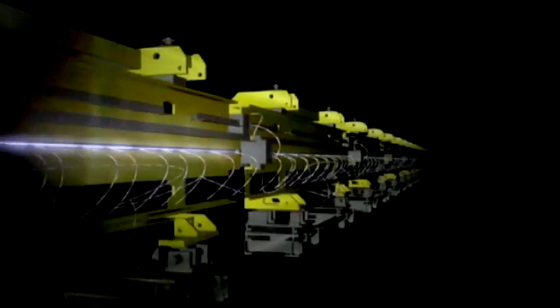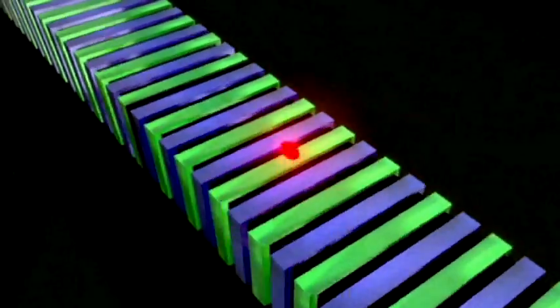Electrons are accelerated to almost the speed of light. Special arrangements of magnets, called undulators, force the electrons to move along a slalom course. In the curves, the fast particles emit short flashes of X-ray light. These flashes overlap and oscillate in sync to create the unique X-ray laser light.